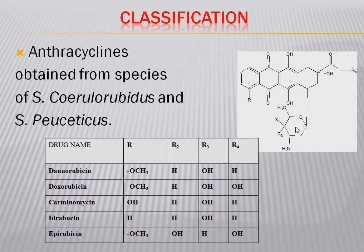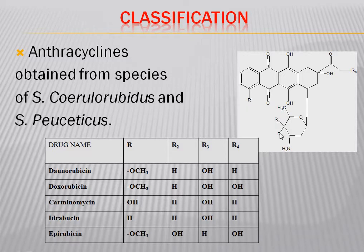If we consider ring E, this is an oxane ring. Looking at the structures of the different drugs: in daunorubicin, there is a methoxy group at the R position, hydrogen at R2, a hydroxy group at R3, and hydrogen at R4.